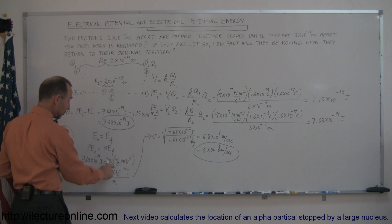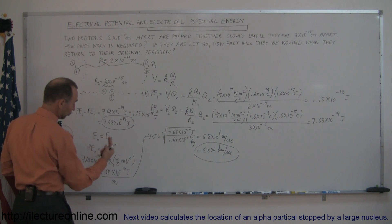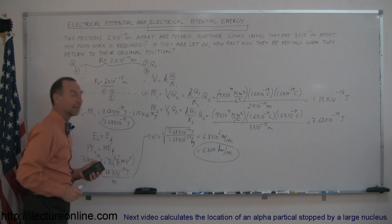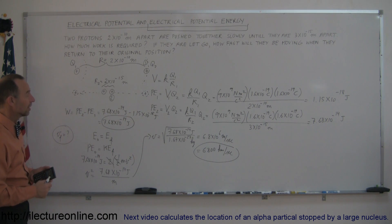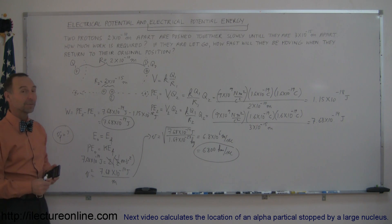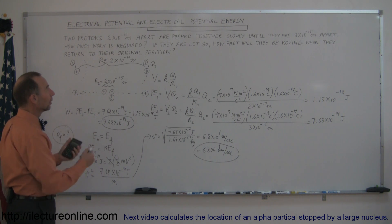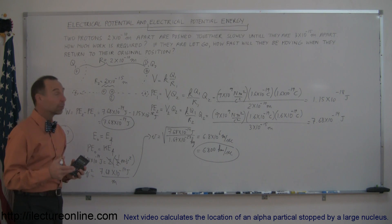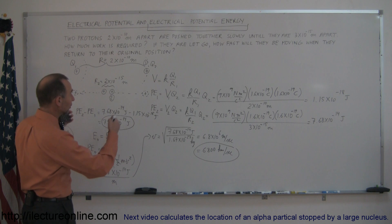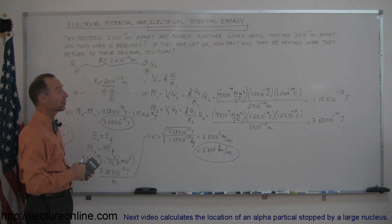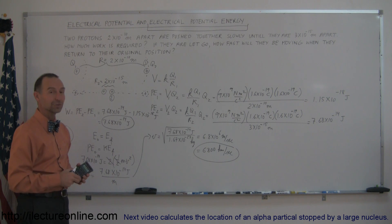The kinetic energy is one-half mv squared; since there are two protons we multiply by two, the two cancels the one-half, and a little algebra gives us the velocity of the protons when they reach their original position. That's how you do a problem like that. Hopefully this helps you see how understanding electrical potential energy and electrical potential can help you solve these kinds of problems. I have a few more examples if you want to stay tuned for the next video.